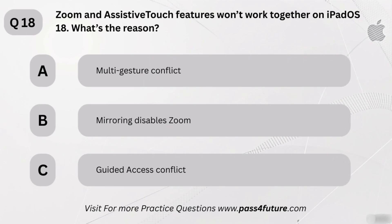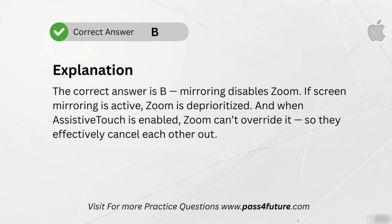Zoom and AssistiveTouch features won't work together on iPadOS 18. What's the reason? A. Multi-gesture conflict. B. Mirroring disables zoom. C. Guided Access conflict. The correct answer is B — mirroring disables zoom. If screen mirroring is active, zoom is deprioritized. And when AssistiveTouch is enabled, zoom can't override it. So they effectively cancel each other out.